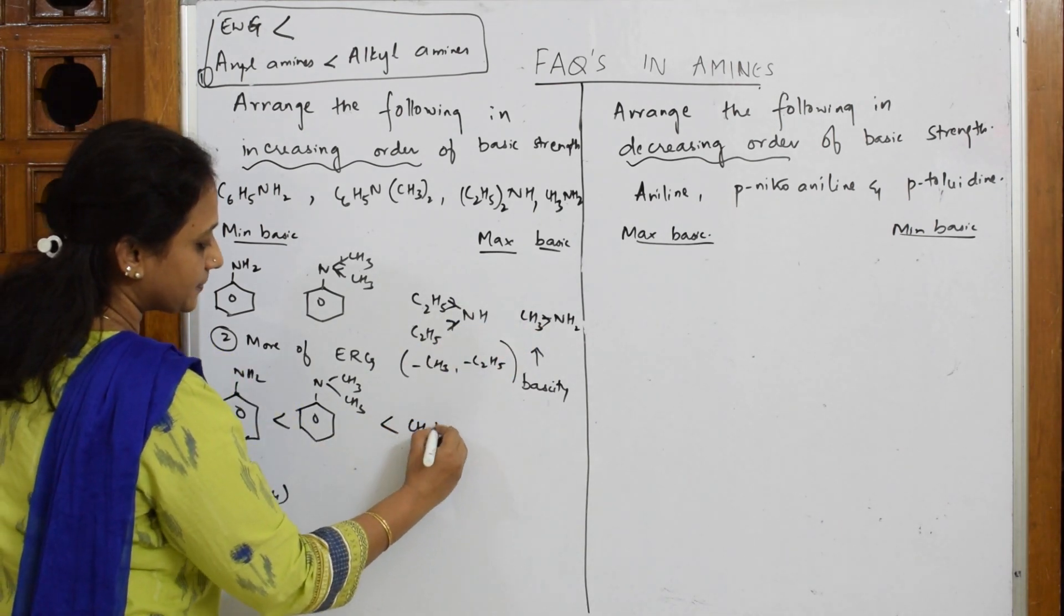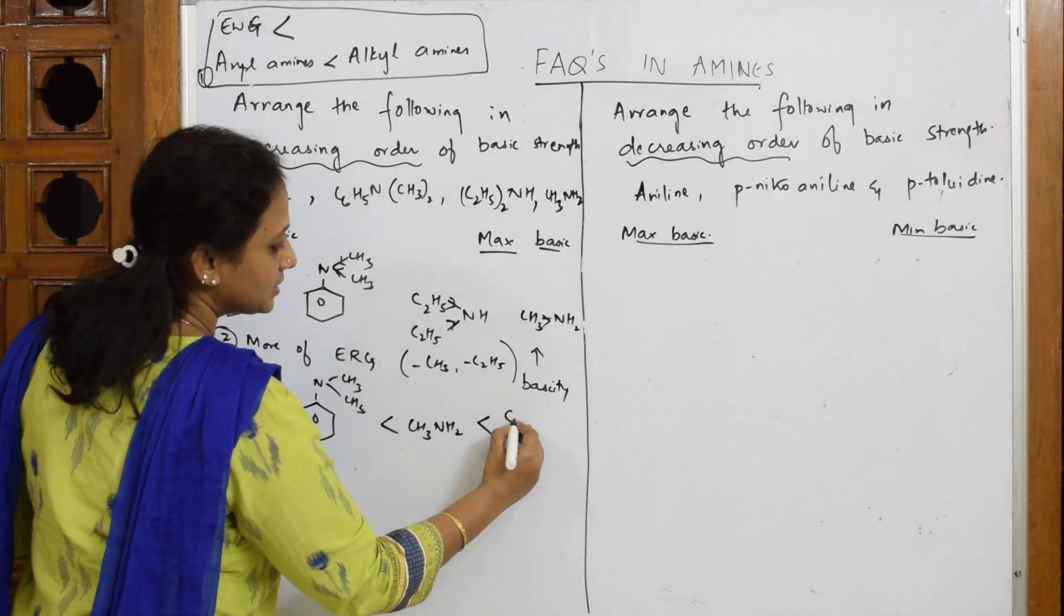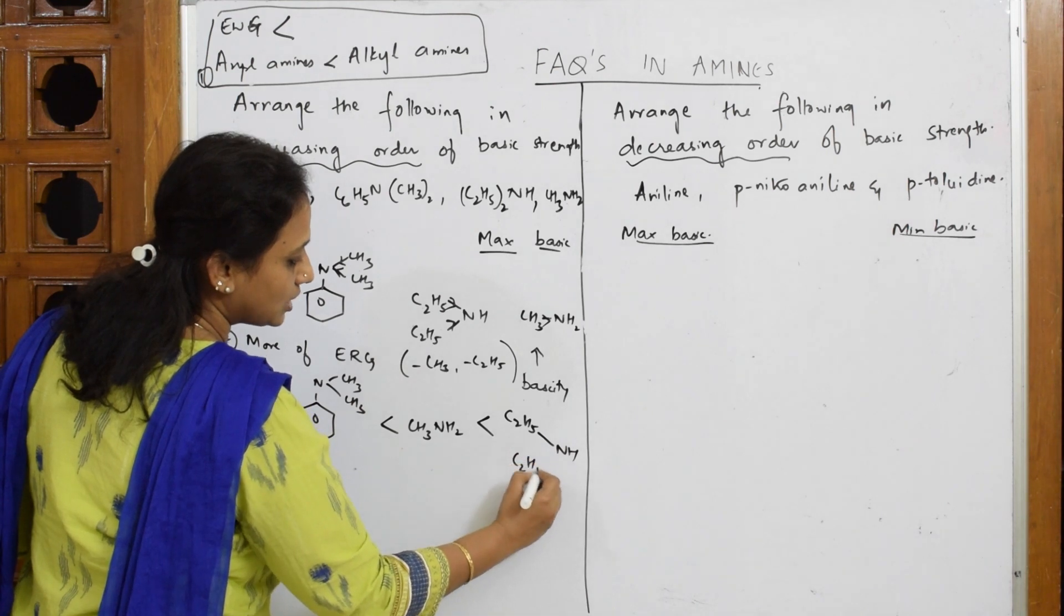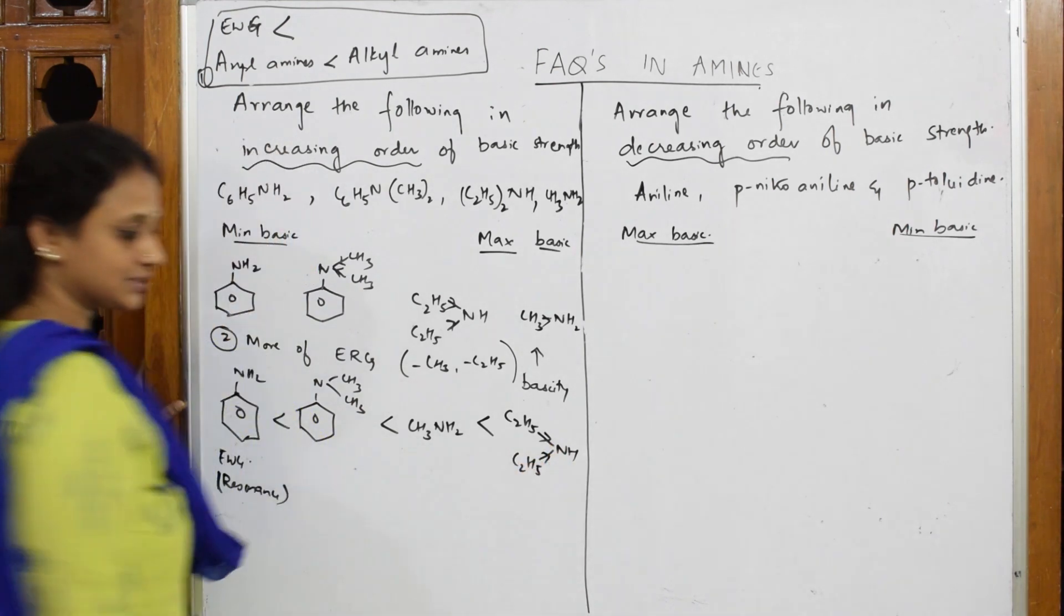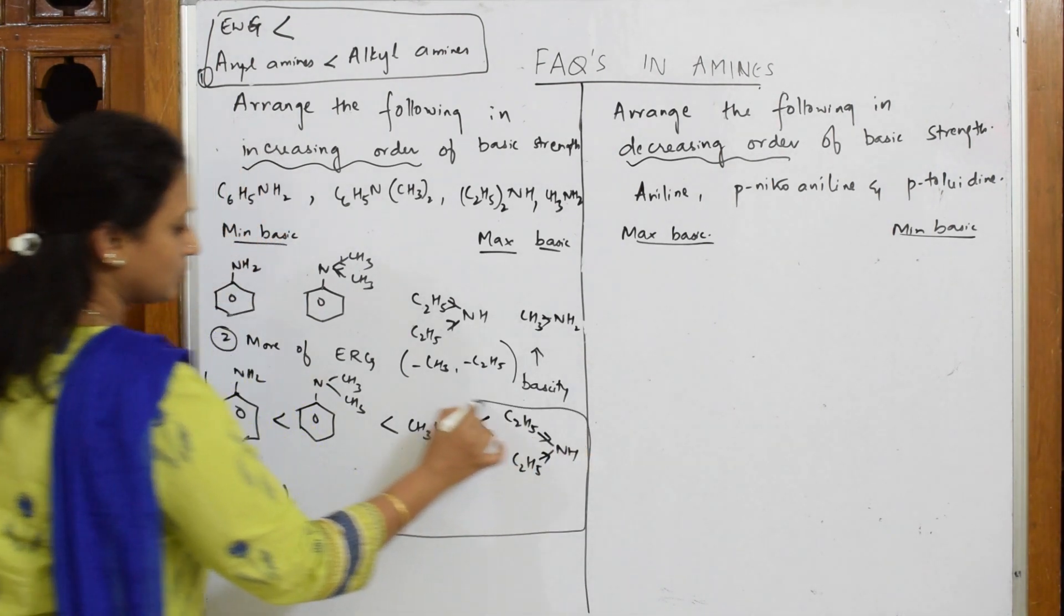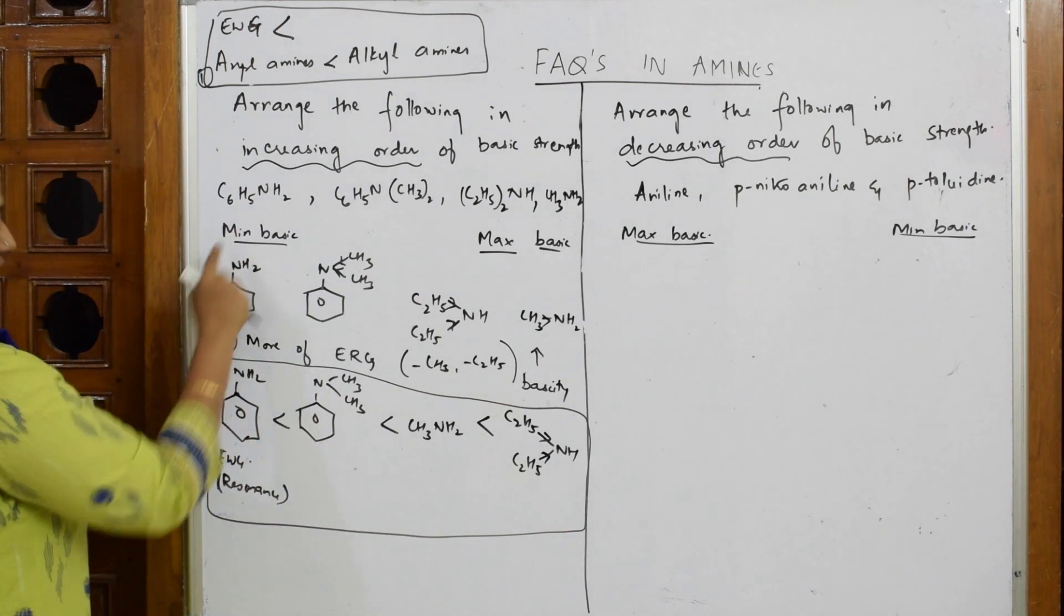would be - this is further lesser because C2H5 maximum, having two alkyl groups donating. That's it. This is how you're going to write the order. This is easy, very easy concept. Please try to understand: minimum basic to maximum basic because of alkyl groups. Let's come back and see the structures: aniline